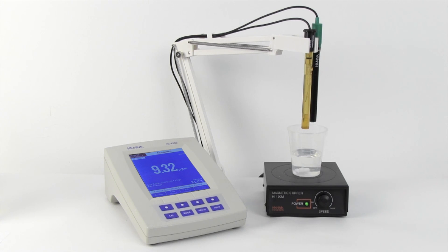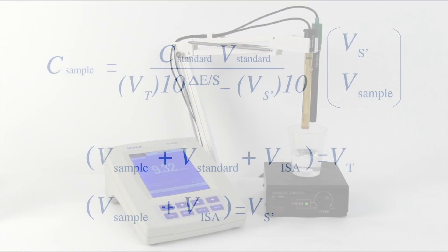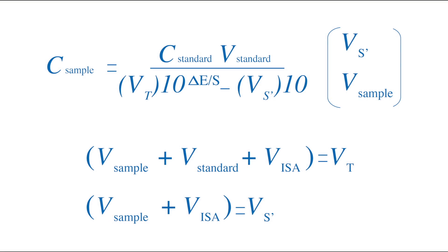The HI4222 has the calculations for the known addition method pre-programmed into the meter. For this calculation, shown here, we will need the following values: the volume of the sample, the volume of the standard, the concentration of the standard, the volume of ISA, and the voltage change before and after the addition.